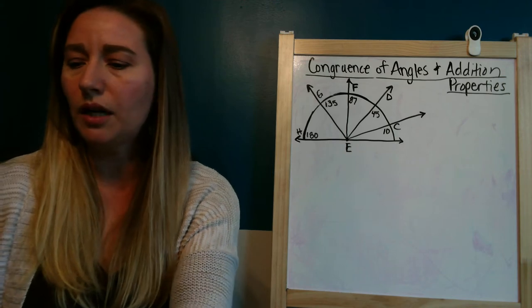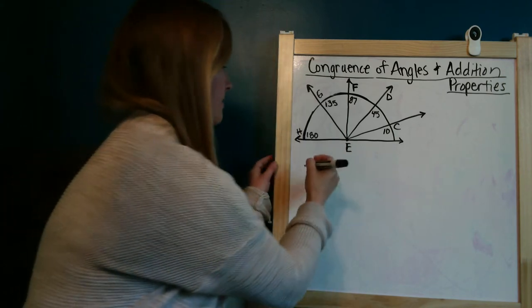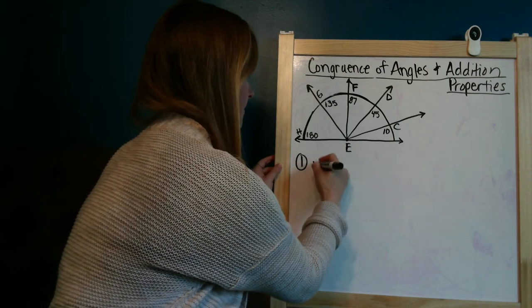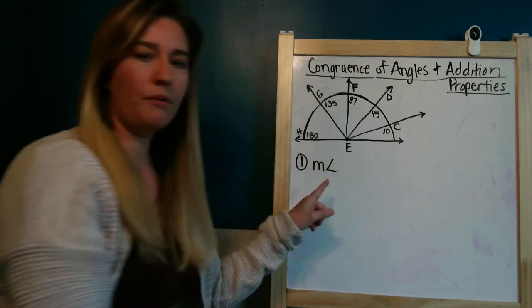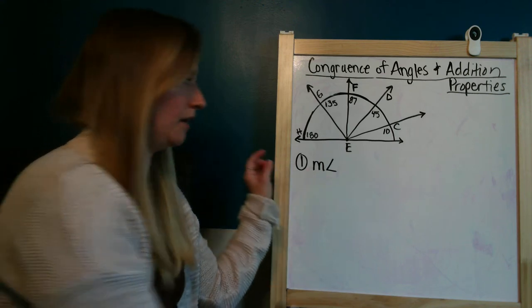So number one, we are asked to find the measure of angle CEB, and this is how we write measure of an angle. So this M with this little angle sign means measure of an angle.